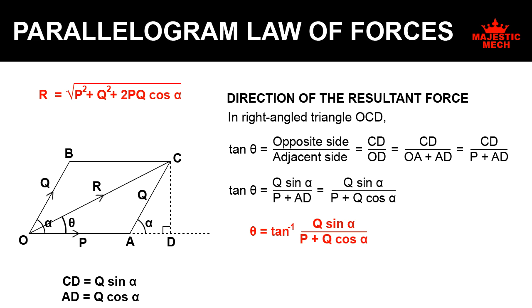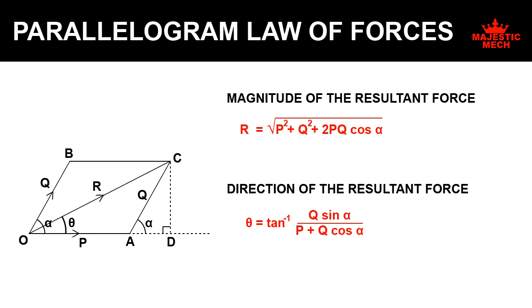So we have arrived at two equations: one for the magnitude of the resultant force — R equals the square root of P² + Q² + 2PQ cos alpha — and one for the direction — theta equals tan inverse of Q sin alpha divided by (P + Q cos alpha).